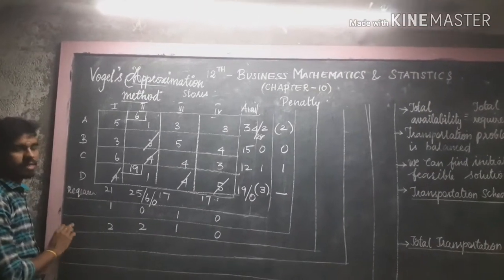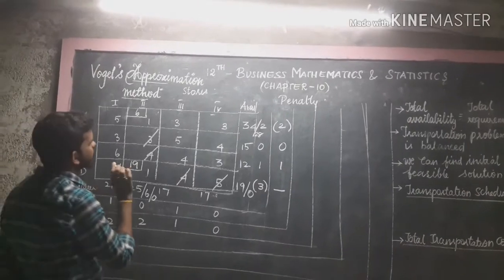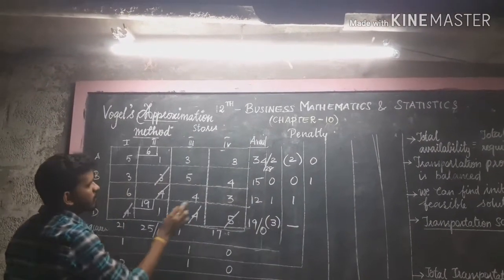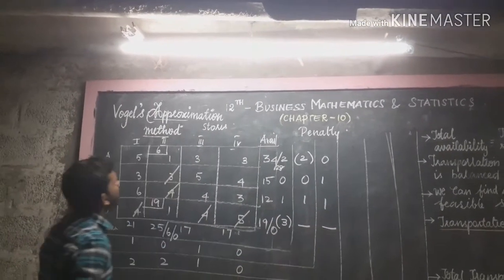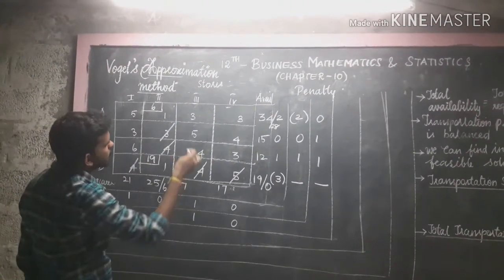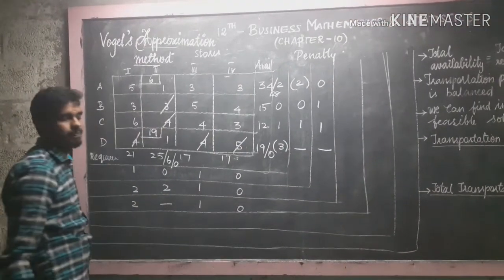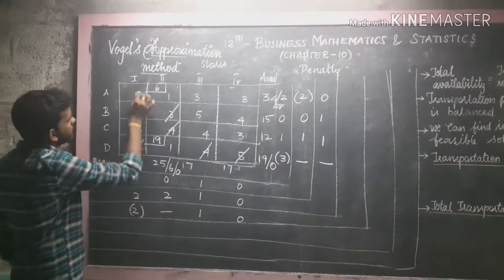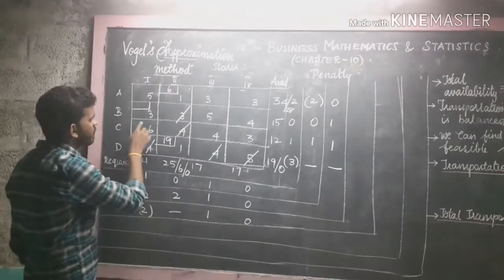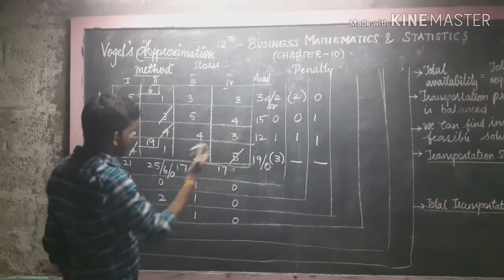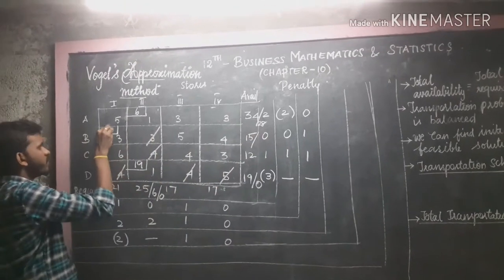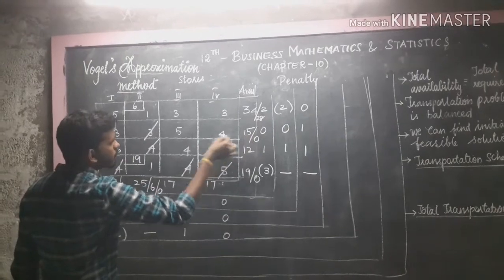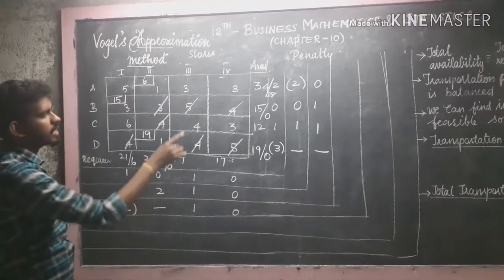For the third allocation, we again find penalties. Row penalties: 3 minus 3 equals 0, 4 minus 3 equals 1, 4 minus 3 equals 1. Column penalties: 5 minus 3 equals 2, 4 minus 3 equals 1, 3 minus 3 equals 0. The highest penalty is 2. The least value in the corresponding column is 3, so we allocate there. Comparing 15 and 21, we take 15. After allocation: 15 minus 15 equals 0 and 21 minus 15 equals 6. The corresponding row is cancelled — no further allocation.